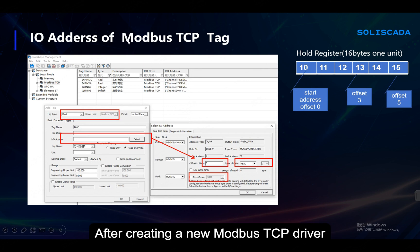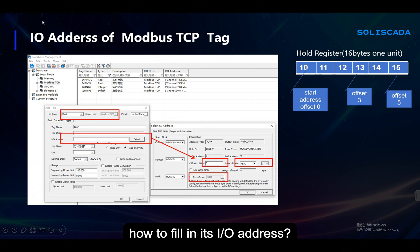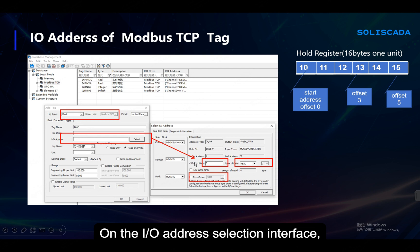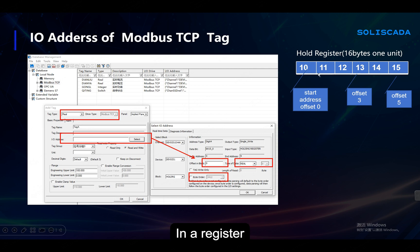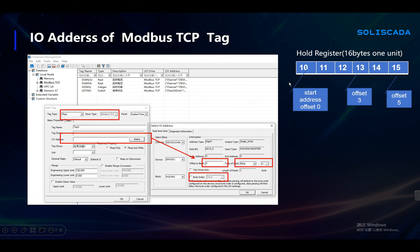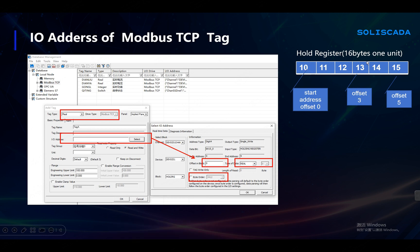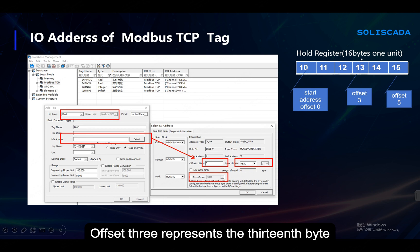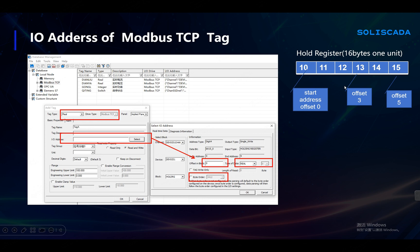In SoliSKADA software, after creating a new Modbus TCP driver, you need to add the block number of Modbus TCP and fill in its I/O address. On the I/O address selection interface, we can see an offset, data type, and the byte order of the data. The offset means the relative position within a register. For example, if we read the holding register starting from the tenth position, offset zero means the tenth one, offset three represents the thirteenth, and offset five means the fifteenth. It has a start address, and then you add the offset address to locate its actual byte address.